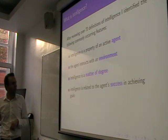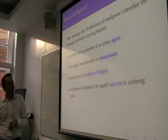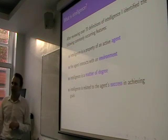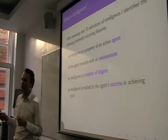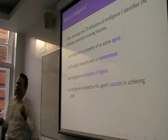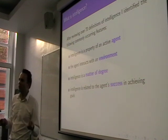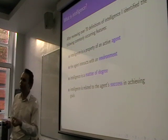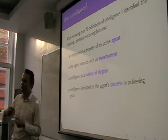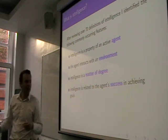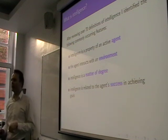Another property, which is perhaps slightly less obvious, is that intelligence is related to the agent's success in achieving goals. It's not that the agent is just sort of drifting around and doing whatever, but there's some tangible sense of success or failure. Intelligence is to do with the agent's ability to make decisions to lead to achieving some sort of goal. And this also comes through in quite a few of the definitions you'll see.